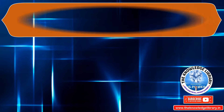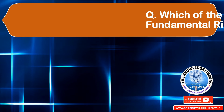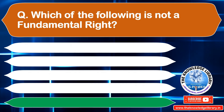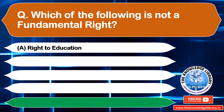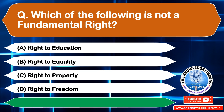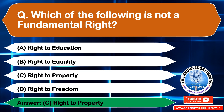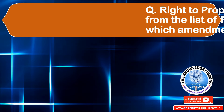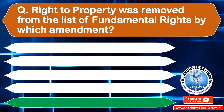The next question is: which of the following is not a fundamental right? Option A: Right to Education, Option B: Right to Equality, Option C: Right to Property, Option D: Right to Freedom. The correct answer is Option C: Right to Property.